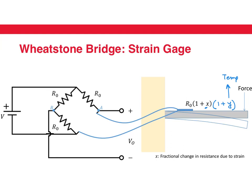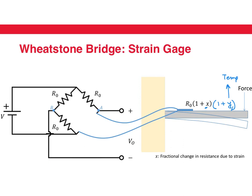There is a way to use the Wheatstone bridge to cancel out the effect of temperature. We can put strain gauges instead of two of the resistors. One strain gauge measures the strain and also has the inadvertent temperature-dependent change in resistance. The other strain gauge is placed so that it does not measure any strain, but because it is in the same environment it captures the temperature change. The temperature dependence in the output of the Wheatstone bridge is thereby reduced quite significantly. To see this, write the voltages of both voltage dividers and subtract them to get the bridge output.